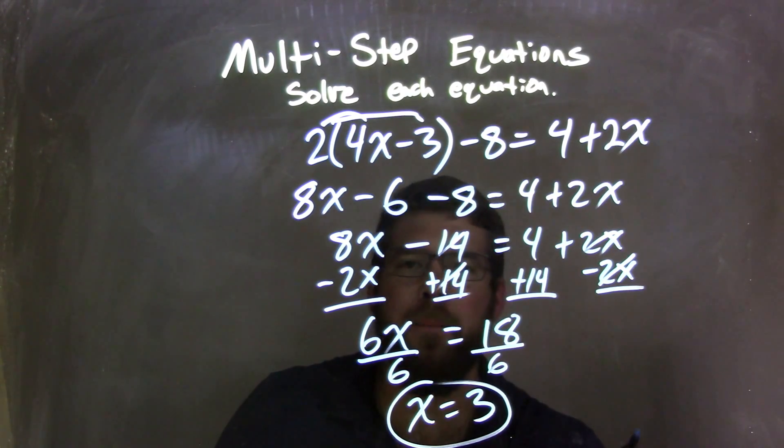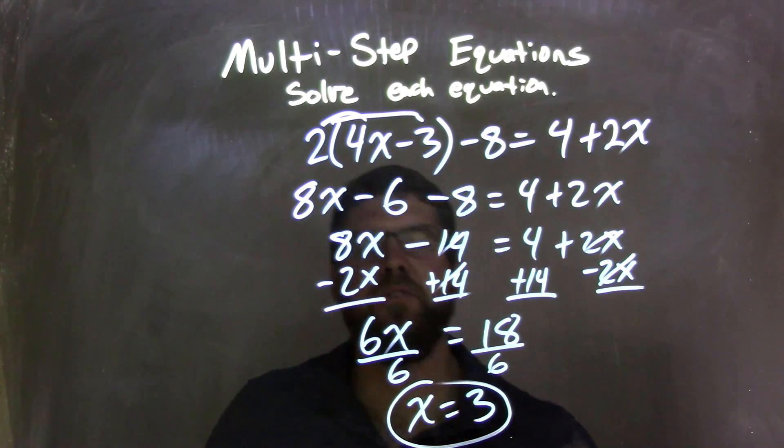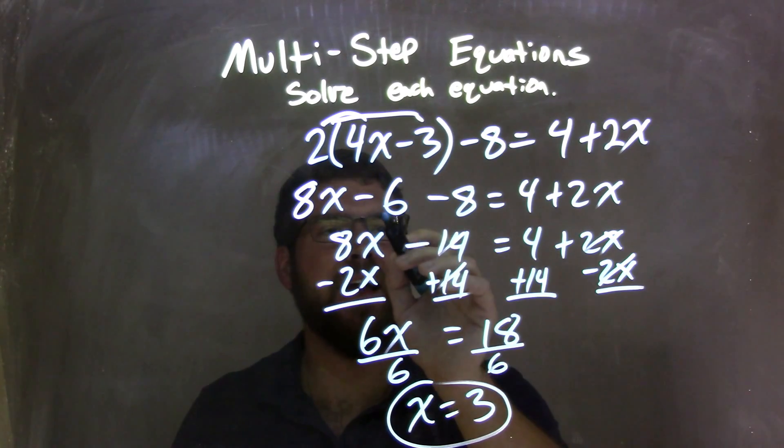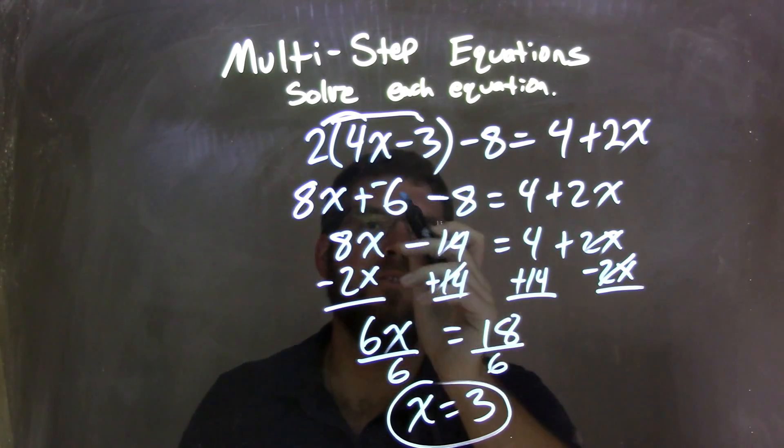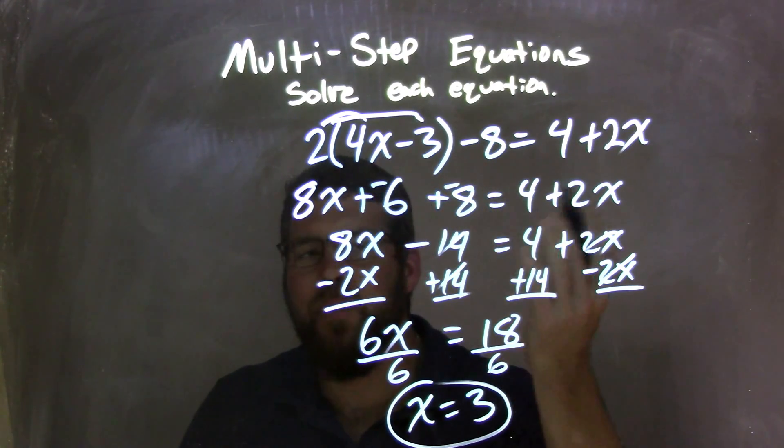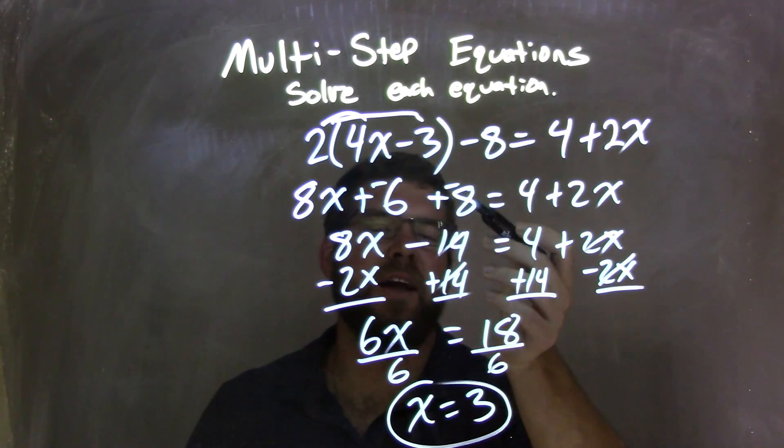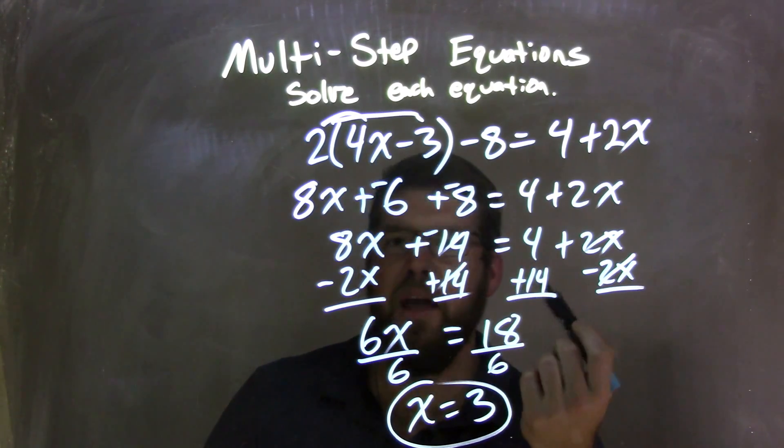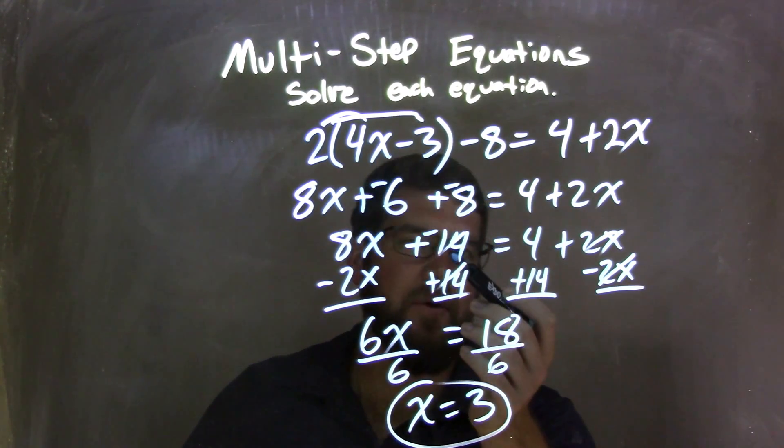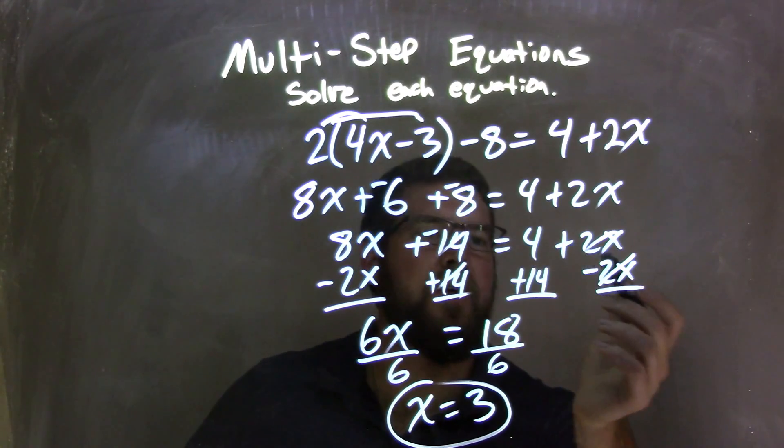Now we have to combine our like terms on each side. So the only thing I need to combine was the negative 6 and the negative 8. That minus 6 is like plus a negative, and this is like plus a negative, if you want to think about that. Negative 6 plus negative 8 is a minus 14, or plus a negative 14. And so we have 8x plus negative 14, in a sense, equals 4 plus 2x.